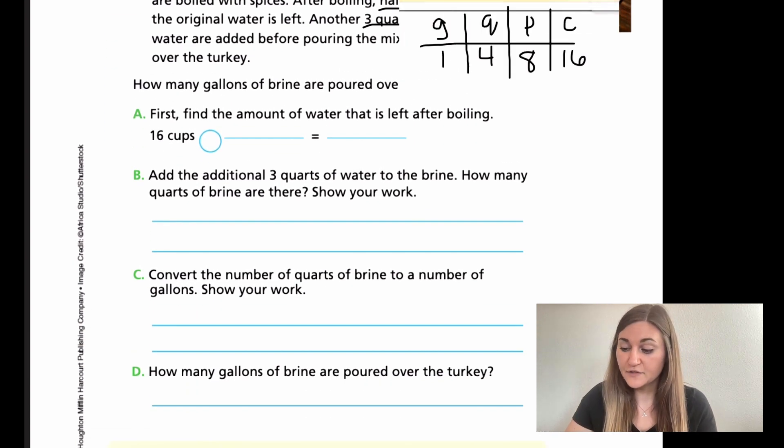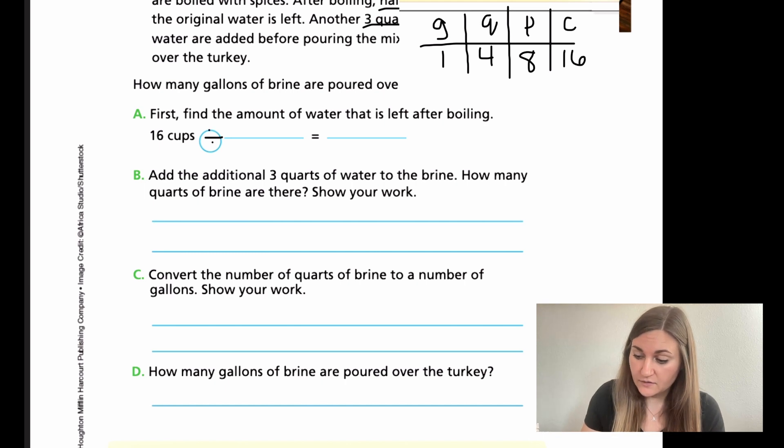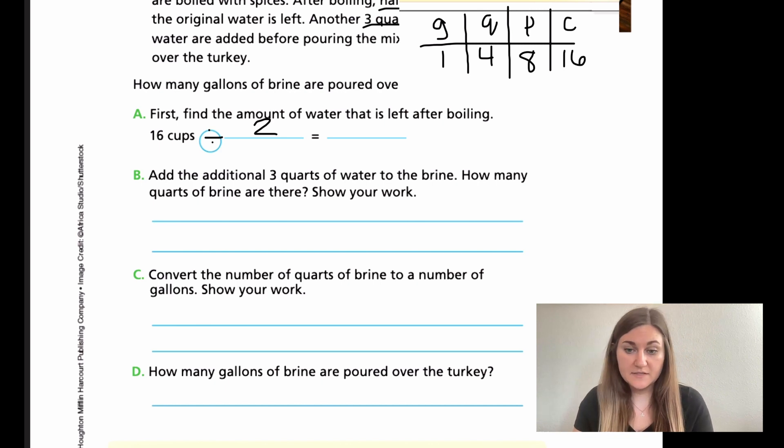So moving into A, it says first, find the amount of water that is left after boiling. So remember, it said after boiling half of the original water is left. So if I'm finding out what's half of 16 cups, how do I find half? If I start with 16, I'm just going to split in half. So I'm going to divide and that's what's going to go in that little circle is divide by two. And what's 16 cups divided by two? It's going to be eight cups.